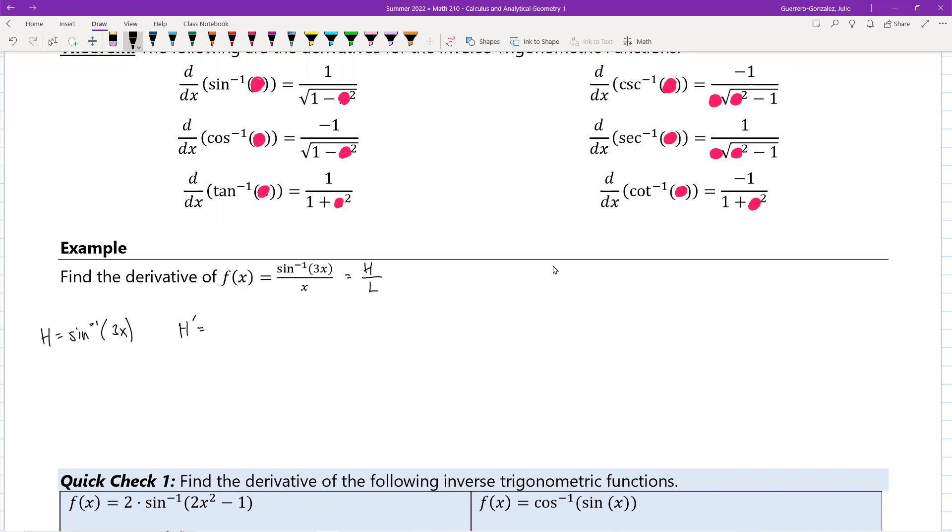So my derivative for this portion is 1 over the square root of 1 plus 3x quantity squared, and that all has to be inside of a square root, times the derivative of the inside, which will just be 3.